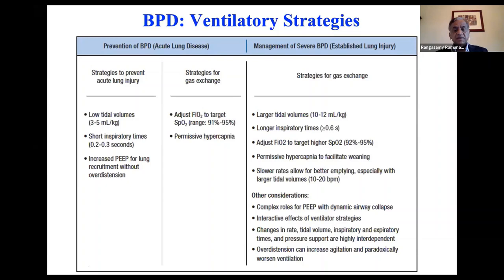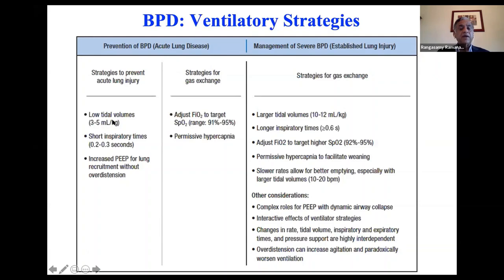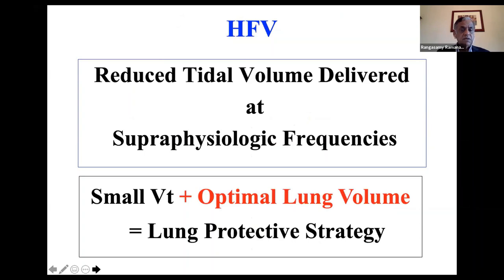For BPD management: use much larger tidal volume of 10–12 mL/kg, long inspiratory time of 0.6–0.8 seconds, adjust FiO2 to target saturation 90–95%, allow higher PCO2 up to 65–70, slow rate of 10–20 breaths per minute because the time constant is prolonged. Complex role of PEEP: because airways collapse, sometimes use PEEP of 7–10 centimeters. You cannot manage a baby with BPD like a baby with RDS — to prevent lung injury, start low tidal volume; to treat established lung injury (BPD), use large tidal volume, long inspiratory time, low rate, and lower saturation target.